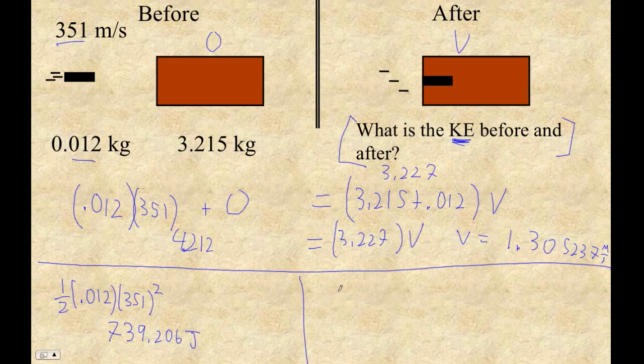The kinetic energy here is 0.5, a bigger mass and a smaller velocity, so it could still be equal. Times 1.305237 squared. Since it's squared, I'm going to use all the digits. So I'm going to go 0.5 times 3.227 times that entire number, all the way down to the limits of my calculator's ability to remember numbers squared. And I get that the energy is 2.7488 joules.